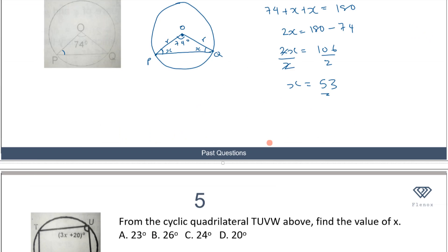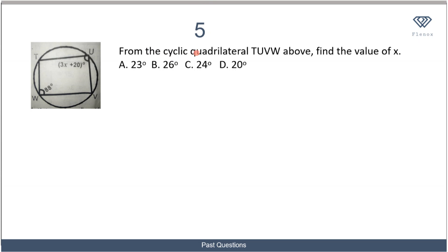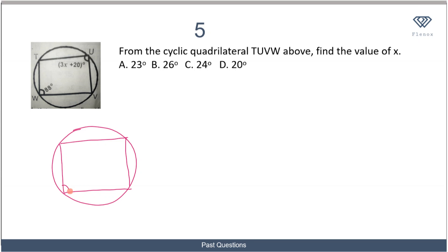In this question, we are told that from the cyclic quadrilateral TUVW, we should find the value of x. Drawing it out: we have a circle with a quadrilateral inscribed in it. One angle is 88 degrees and the opposite angle is 3x plus 20 degrees. If you recall our theorem on cyclic quadrilaterals, the sum of opposite angles in a cyclic quadrilateral equals 180 degrees.